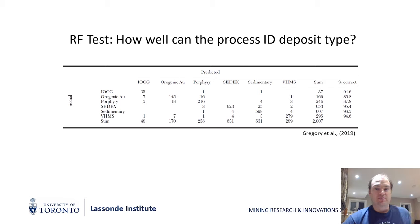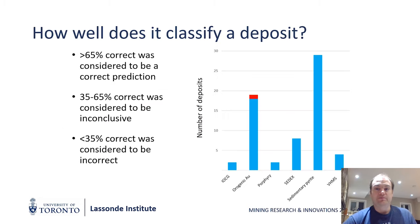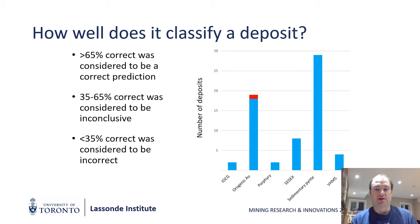So how well could it identify each deposit type? Pretty well — our classifier had orogenic gold being the worst performer, correctly identified almost 86% of the time. The best identified was the sedimentary-entry pyrite, correctly identified 99% of the time. This is important because that was our standard for unmineralized pyrite, so the classifier is doing really well at selecting unmineralized pyrite. Because we had an uneven amount of data, we also checked how well it could classify individual deposits, using a threshold of greater than 65% correct identification. Every one of our deposits was correctly identified except for one of the orogenic gold deposits.